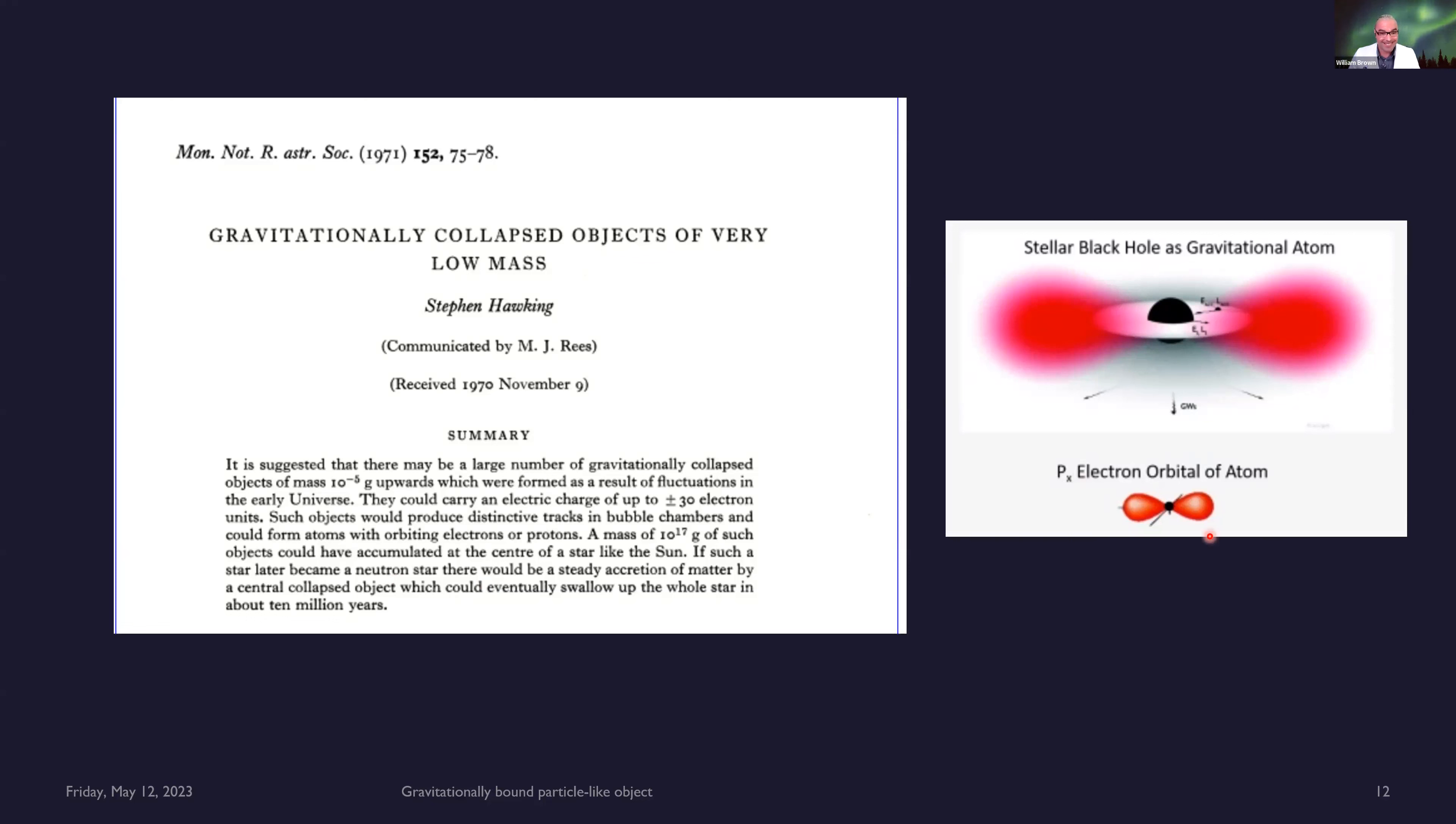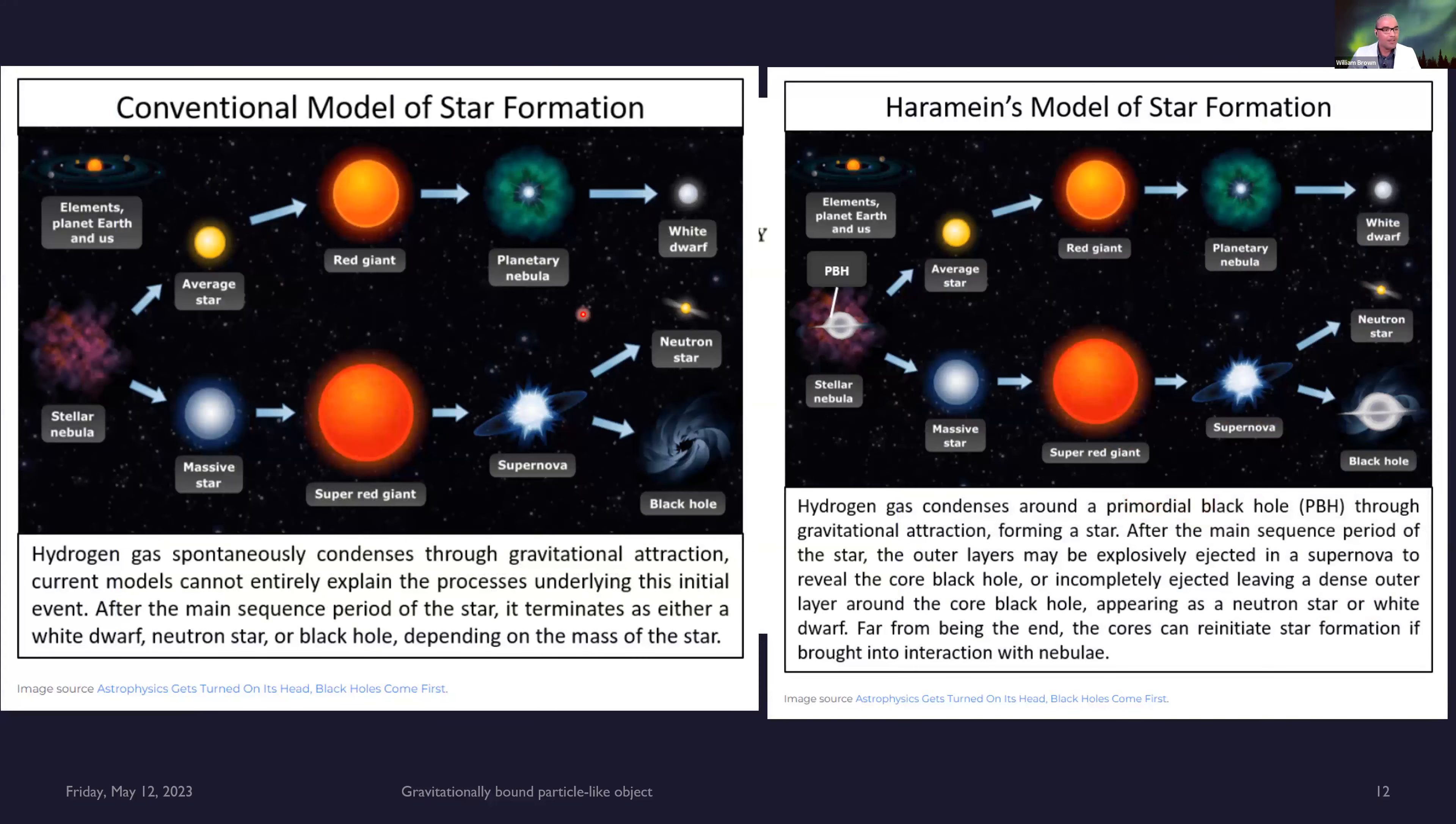What we call atoms are gravitationally bound particle-like objects. And so, as suggested by Hawking, black holes could be at the center of most every star.